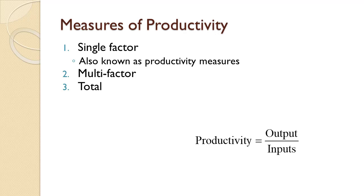In single factor productivity, which is also known as a partial productivity measure, a single input is used. It could be labor hours, labor dollars, machine hours, machine dollars, or any other measure in which the company is interested.